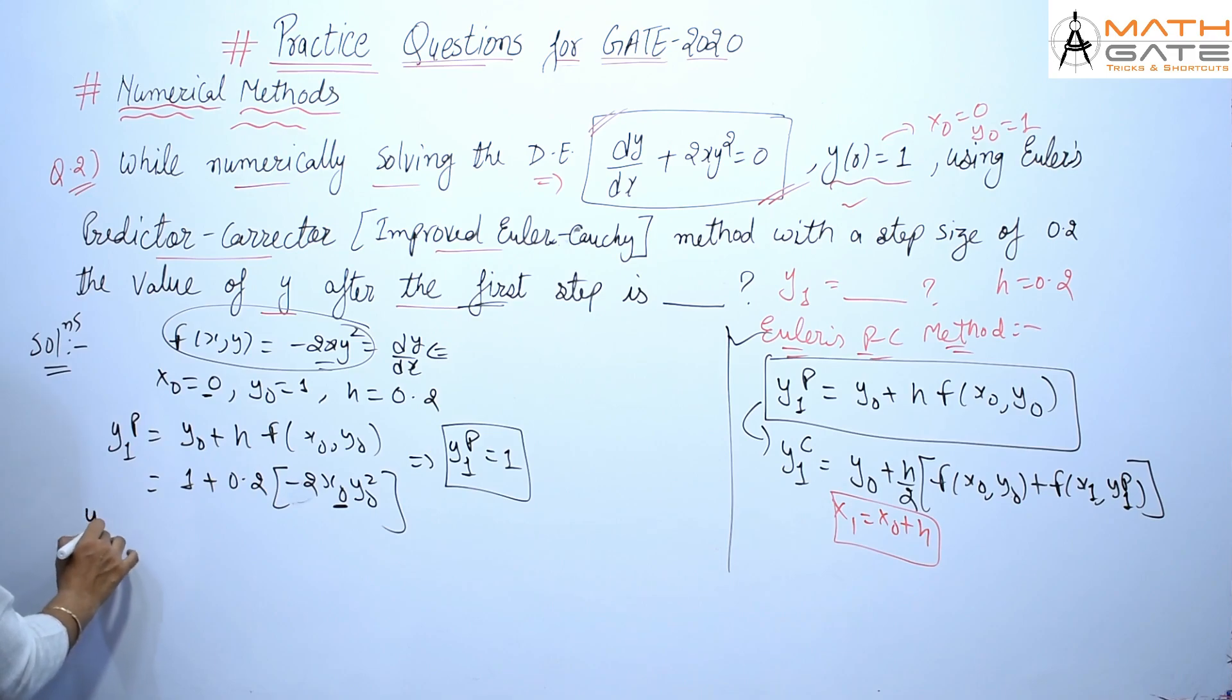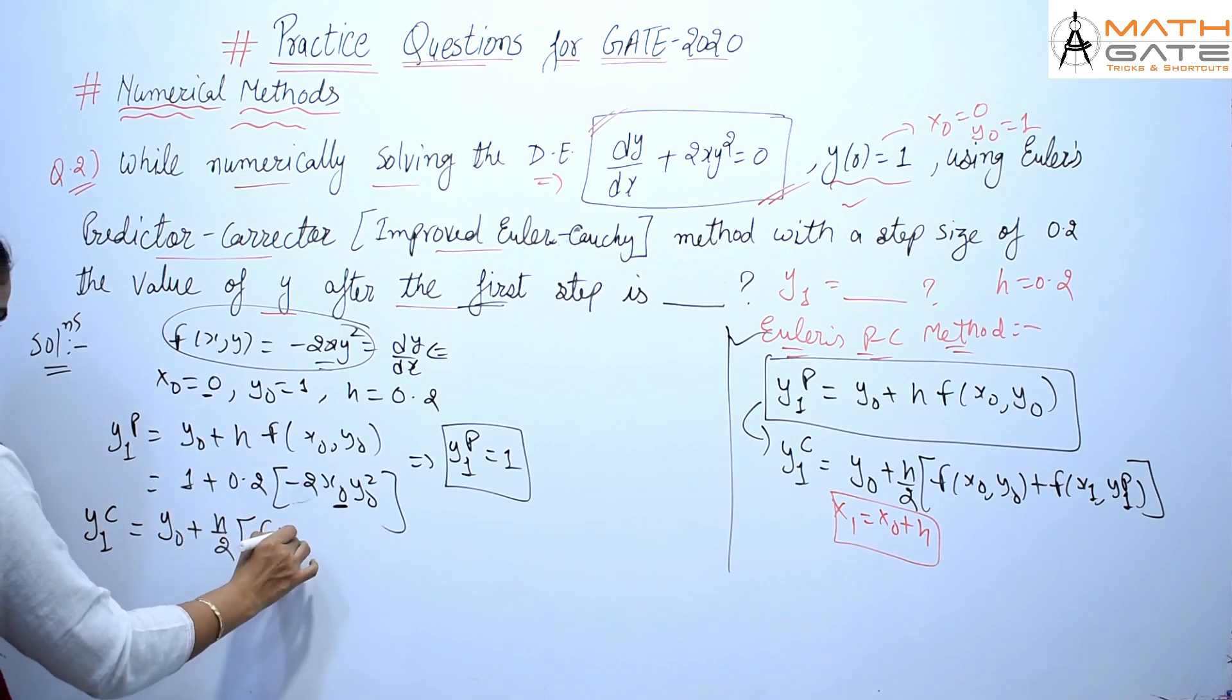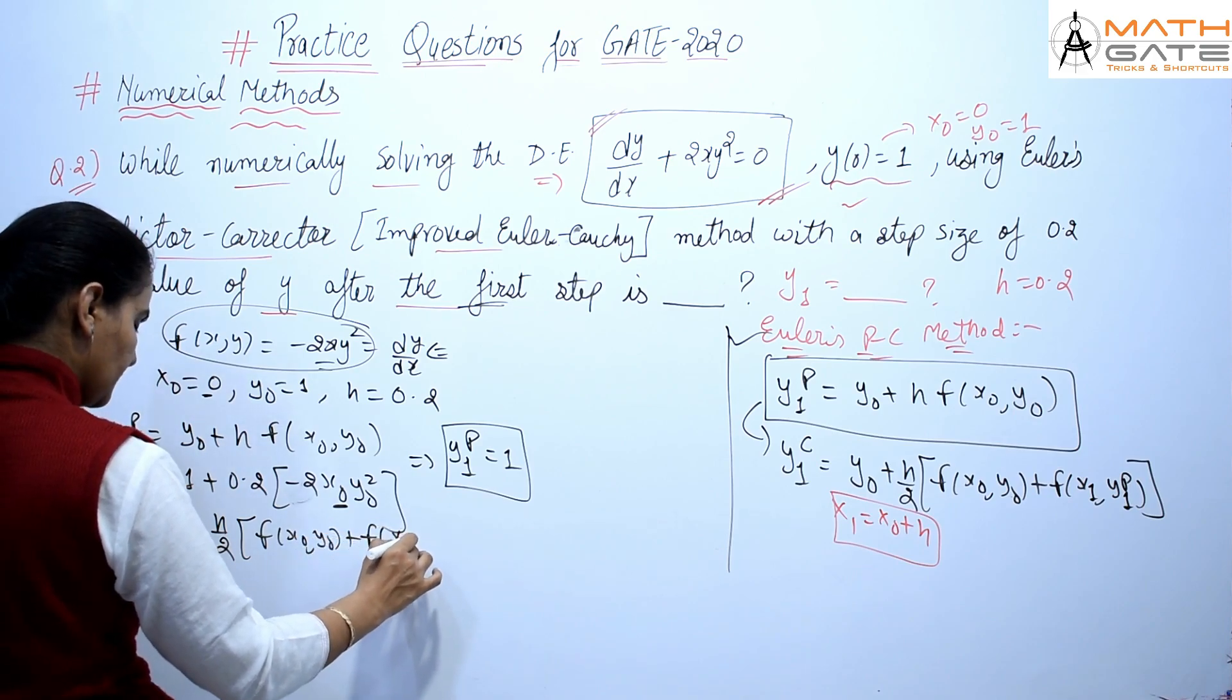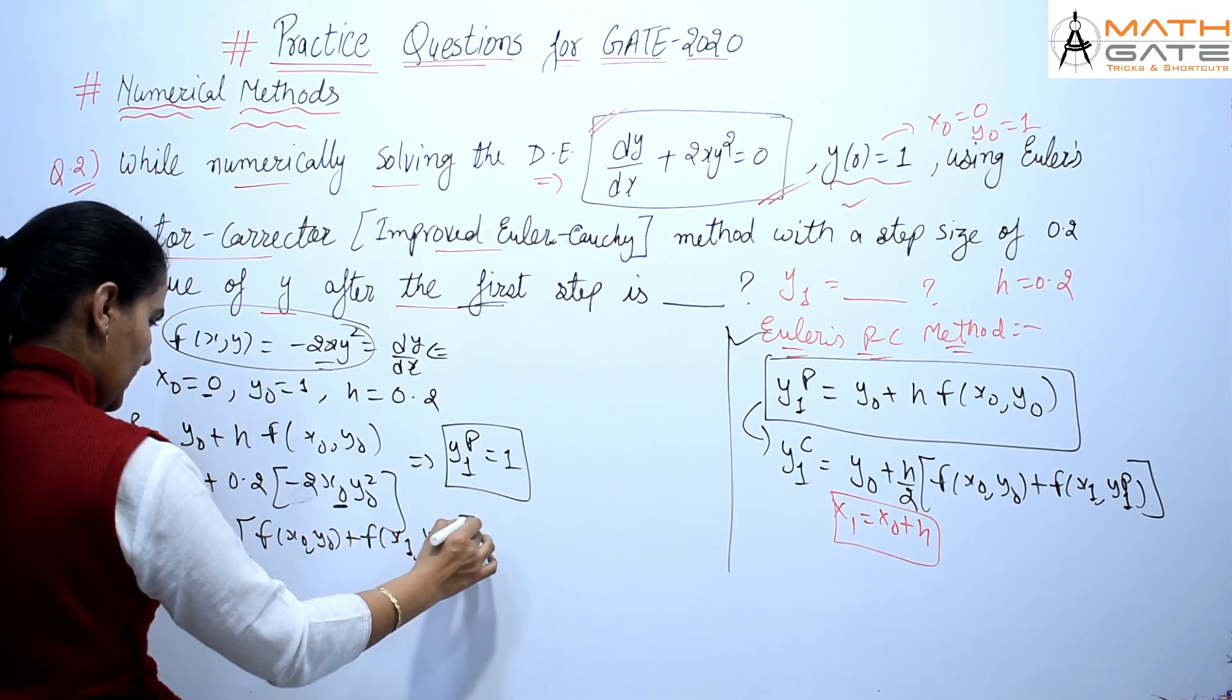Now we have the value of y₁ᵖ. So y₁ᶜ = y₀ + h/2[f(x₀, y₀) + f(x₁, y₁ᵖ)].